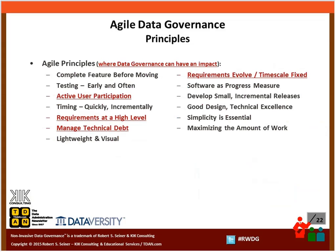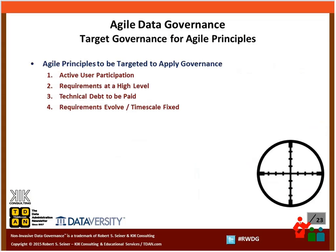The four agile principles I've selected to talk about in this webinar are: active user participation, looking at requirements at a very high level, managing something called technical debt, and the fact that in agile projects requirements evolve while the timescale tends to be fixed. We want to make certain that we can apply governance where it makes the most sense — so we're going to focus on these four today.